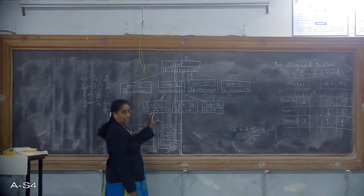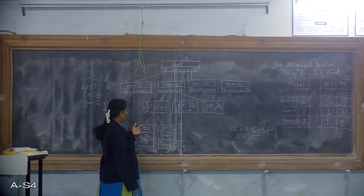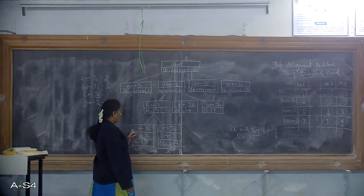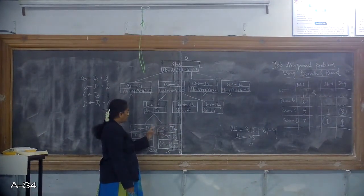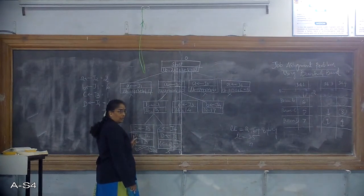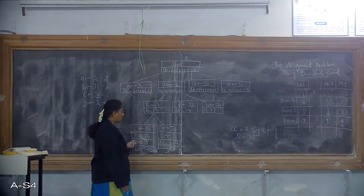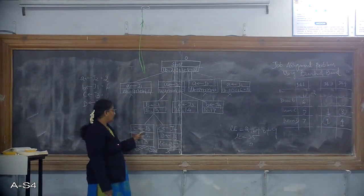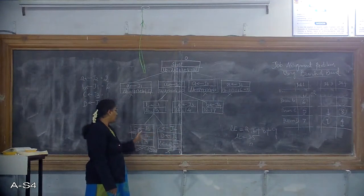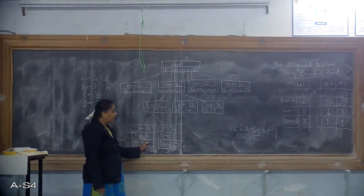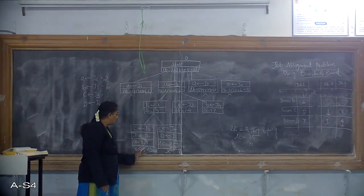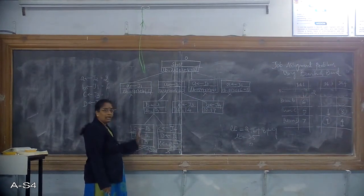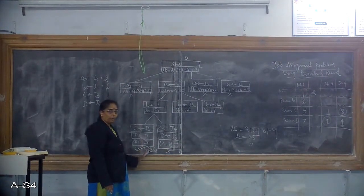For C and D, 2 options each are available: J3 or J4 for C, and J4 or J3 for D. The assignment of J3 to C and J4 to D gave the least cost. That is why this is the optimal solution. Tracing the tree: J4 to D, J3 to C, J1 to B, and J2 to A.